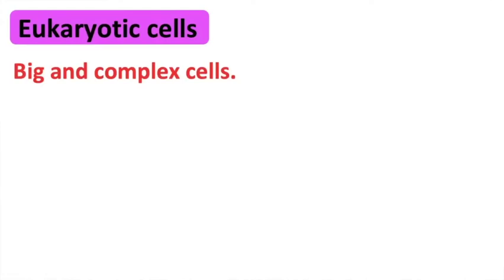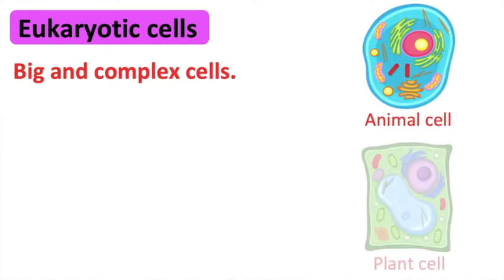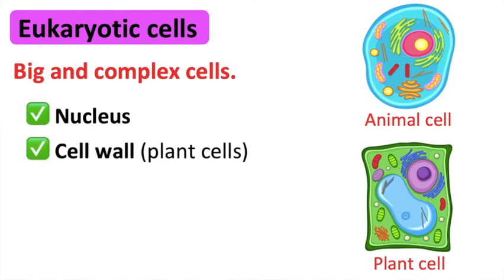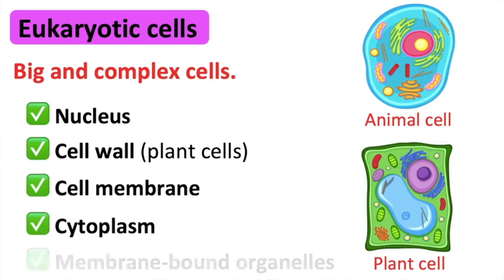Eukaryotic cells. These are big and complex cells. The genetic material of eukaryotic cells are enclosed in a nucleus. They also have a cell wall, cell membrane, cytoplasm, and other membrane-bound organelles.